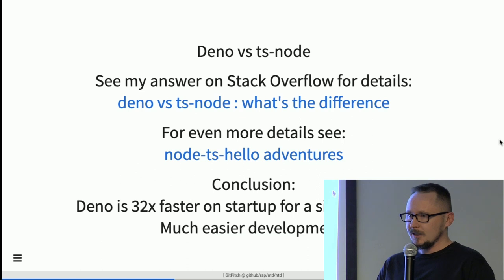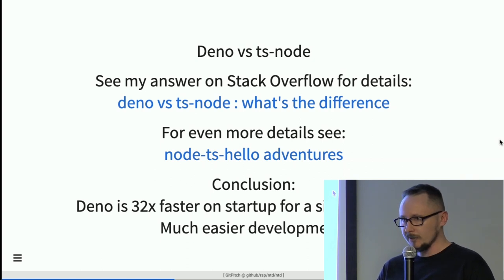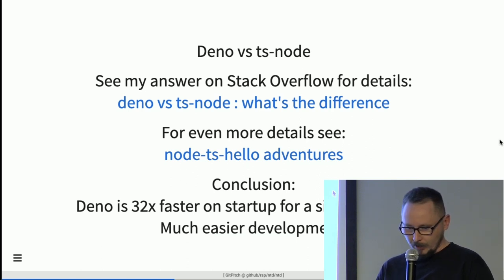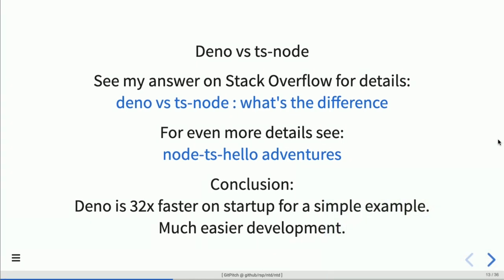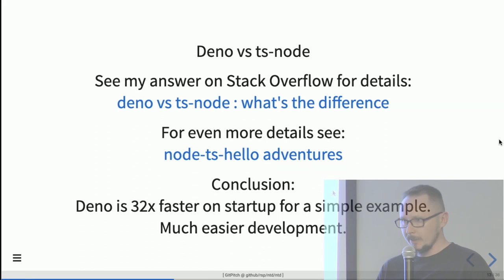One of the Stack Overflow questions was about how Deno compares to ts-node, because if it's just a TypeScript runtime, we already have ts-node which uses Node.js underneath. The basic conclusion from some simple tests is that Deno is a lot faster on startup. For a simple example — a single file requiring a single library and running a single function — ts-node startup time was almost a second, while on Deno it was in milliseconds.